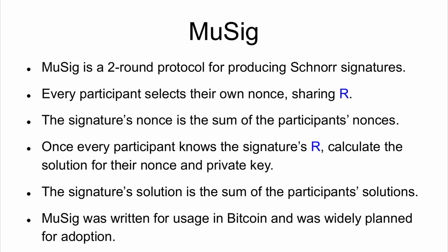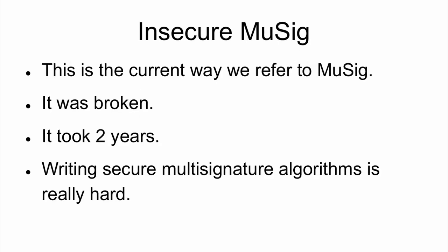This was written for usage in Bitcoin and was widely considered for adoption. Then we have insecure MuSig — the current way we refer to MuSig. It was broken. It actually took two years, and this goes to show that writing secure multi-signature algorithms is really hard. It was planned for usage in Bitcoin, and yet — nope.